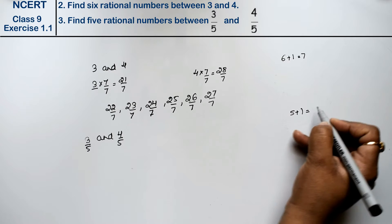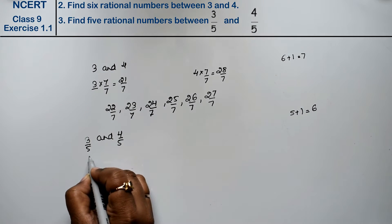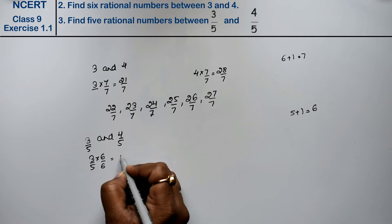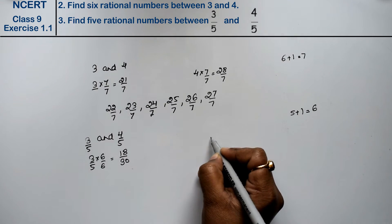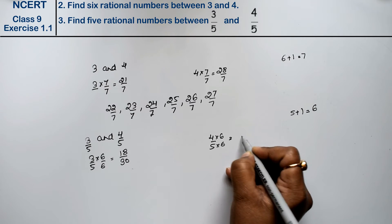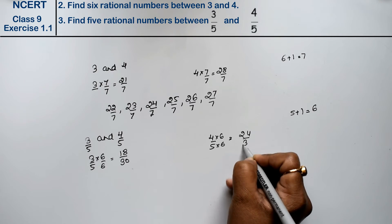So, 5 plus 1, how much is it? 6 is the answer. Now, 3 upon 5 into 6 upon 6. So, it is 18 upon 30. And 4 upon 5 into 6 upon 6 equals to 24 upon 30.